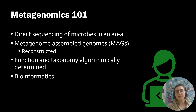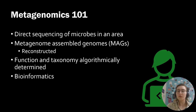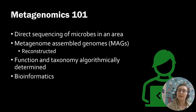Metagenomics is a direct sequencing of all microbes in a given area. These sequences must be rearranged like a giant puzzle into a metagenome-assembled genome, or MAG. These MAGs can then be analyzed using algorithms to determine functional identity and taxonomy. This field that includes the processing and analysis of these data is called bioinformatics.